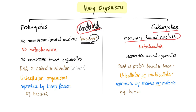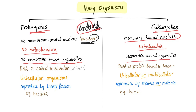Eukaryotes have a membrane-bound nucleus. Prokaryotes have no mitochondria; eukaryotes have mitochondria. Prokaryotes have no membrane-bound organelles; eukaryotes have membrane-bound organelles. Prokaryotes have DNA that is naked and circular. Eukaryotes, generally, have DNA that is protein-bound and linear.